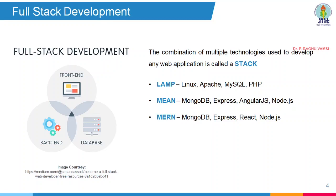Full stack development includes the front-end, the back-end — which means the database and the business logic. These three things are included in full stack development. The combination of multiple technologies used to develop a web application is called a stack, here called a 3-tier stack. Several frameworks and platforms are available for full stack development.